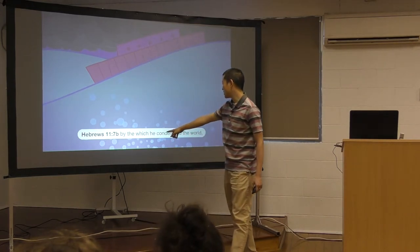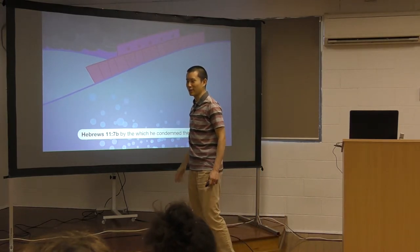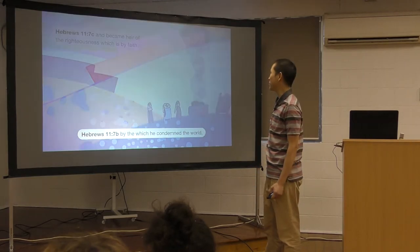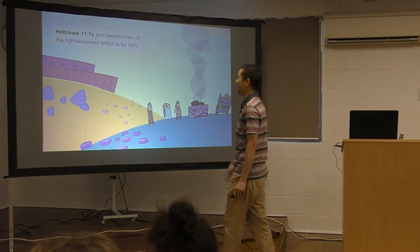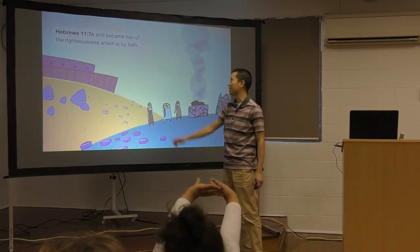By the which he condemned the world. So he was making the ark, and then everyone knew that the flood was coming. They didn't get on, did they? Only eight people got on. And became heir of the righteousness which is by faith. So this is his family after they get off the ark.